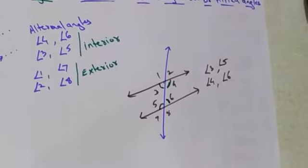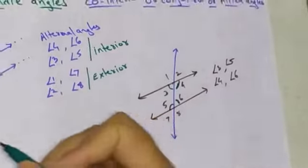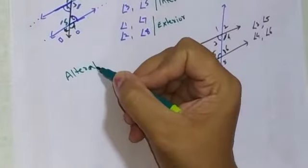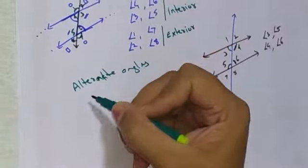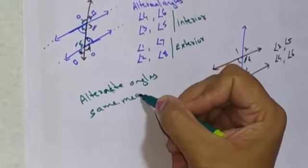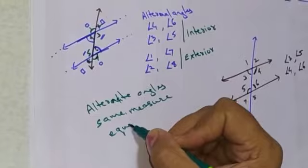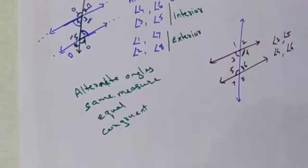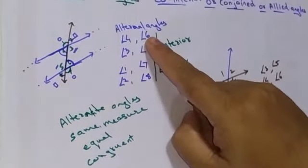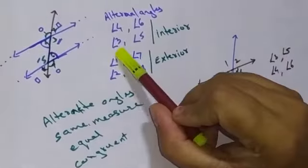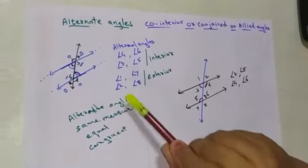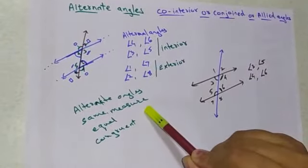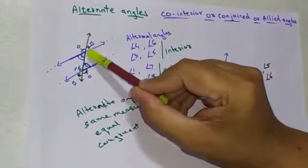Now let us see the properties. Alternate angles are always of the same measure — that is, they are always equal; you can say they are congruent. So angle 4 and angle 6 will have the same measure, and angle 3 and angle 5 will have the same measure. Same for the exterior: angle 1 and angle 7 will have equal measures, and angle 2 and angle 8 will have equal measures — they are congruent.